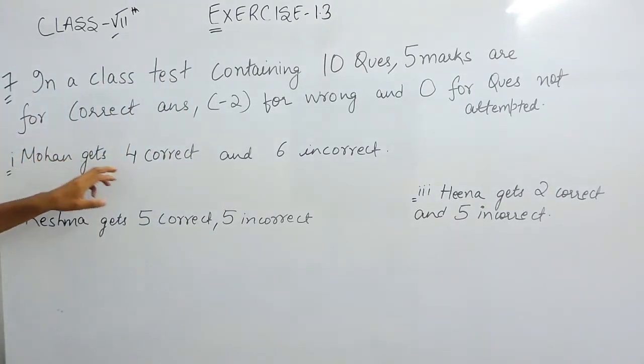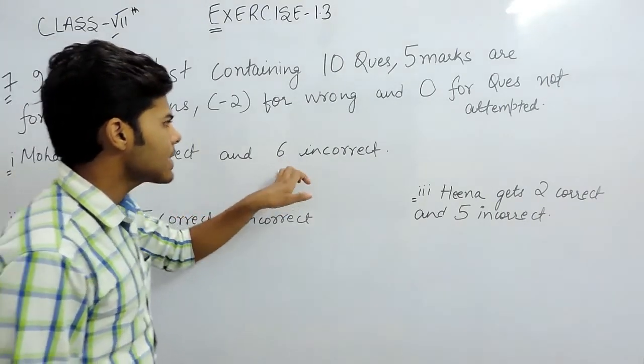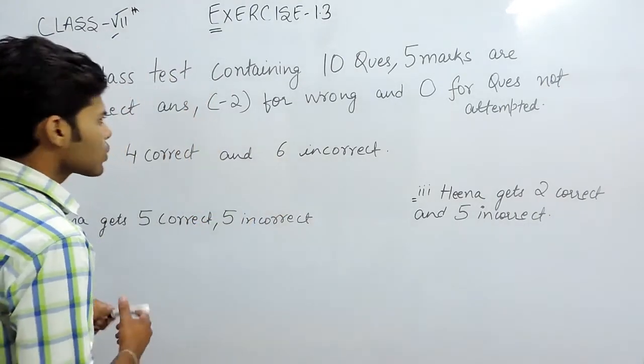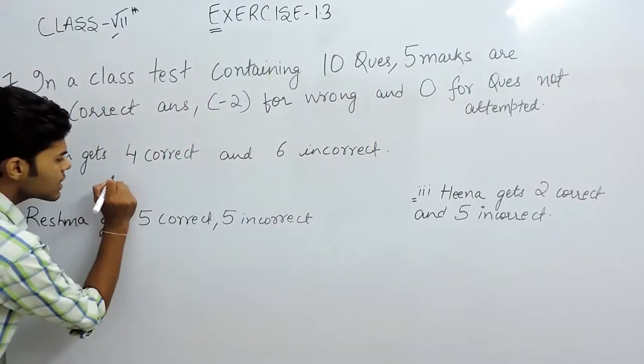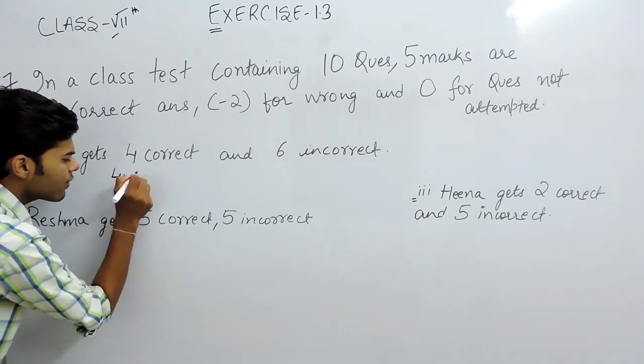The first one says that Mohan gets 4 correct and 6 incorrect. For 1 correct, we are giving 5 marks. So for 4 correct answers, it will be 4 multiplied by 5.